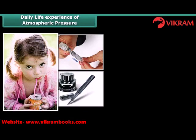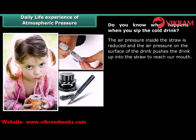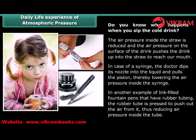Daily life experiences of atmospheric pressure. In our day-to-day activities we experience various instances of atmospheric pressure. Common examples are: sipping a cold drink through a straw, dipping the nozzle of a syringe in liquid, or filling ink in fountain pens. When you sip a cold drink, the air pressure inside the straw is reduced and the air pressure on the surface of the drink pushes the drink up into the straw to reach your mouth. In the case of a syringe, the doctor dips its nozzle into liquid and pulls the piston, lowering the air pressure inside. For ink-filled fountain pens with rubber tubing, the rubber tube is pressed to push out air, reducing air pressure inside the tube.